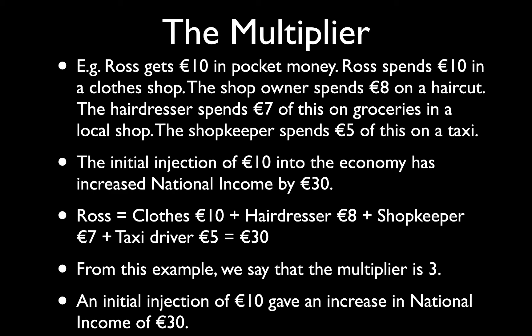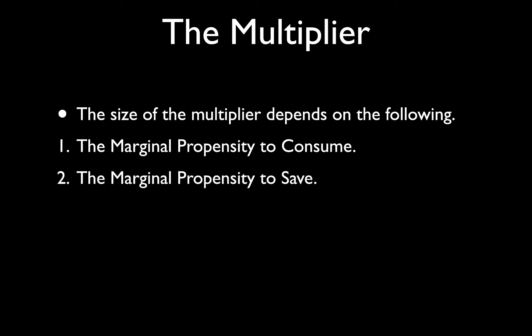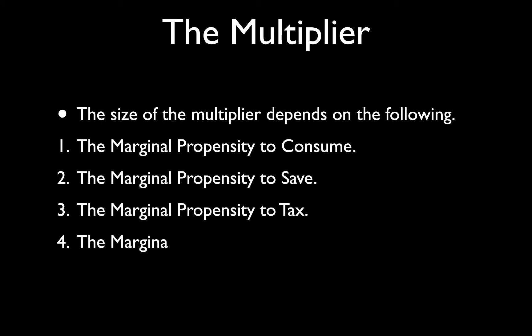The size of the multiplier is affected by several things: the marginal propensity to consume (MPC), the marginal propensity to save (MPS), the marginal propensity to tax (MPT), and the marginal propensity to import (MPM). Savings, taxation, and imports are all leakages in the circular flow of income, so leakages will reduce the multiplier.